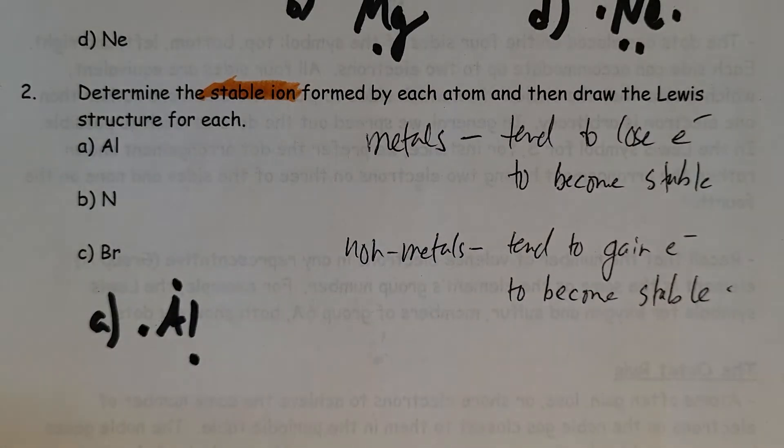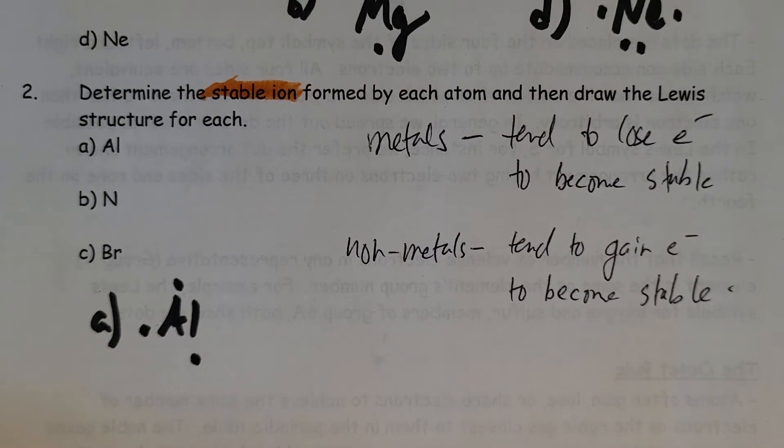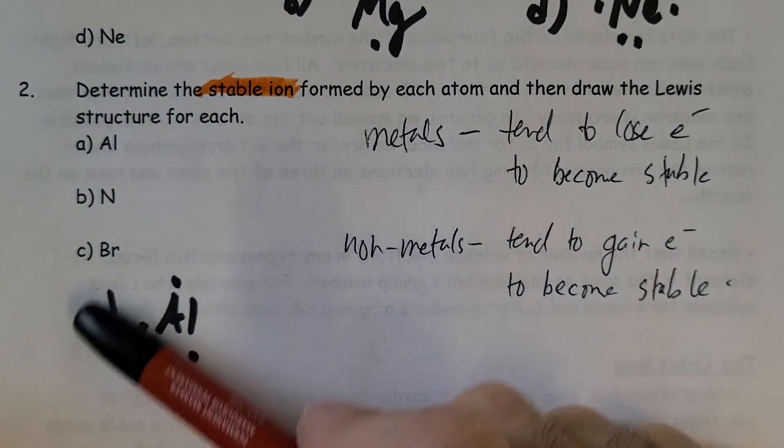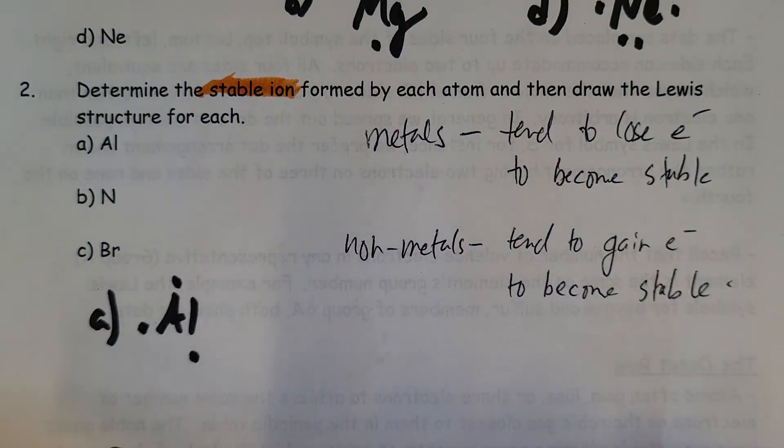In order to become stable, it needs to have eight, right? So if we're starting off with three, there's basically two ways we can become a stable ion by gaining or losing. If I have three, I could gain five to get to eight, or I could lose three and then the level below is going to be the full level. And that's in fact what happens.